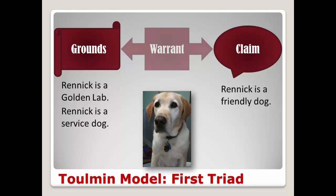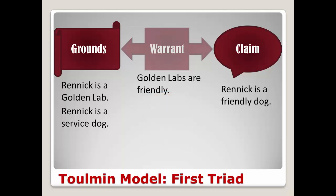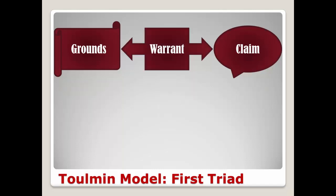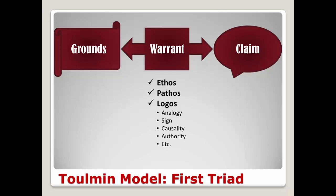Now what connects the grounds to the claim? What does being a golden lab or a service dog have to do with Grennick being a friendly dog? That's the warrant. One of the characteristics of both golden retrievers and Labradors is that they're friendly, or a requirement of being a service dog is that they not be aggressive. Warrants can be based upon the classic inartistic rhetorical proofs of ethos or source credibility, pathos — which are emotional or motivational appeals — and pathos can also involve appealing to shared values such as free speech, the public's right to know, honesty is important, etc. And logos, which involves both inductive and deductive reasoning, such as analogy, sign, causality, authority, etc.